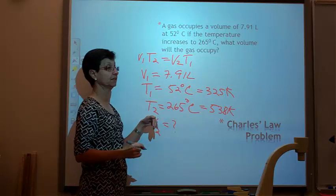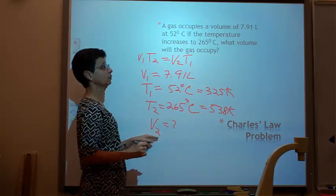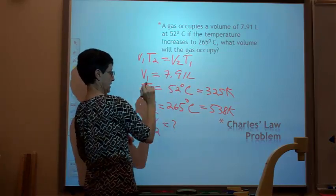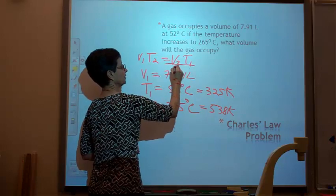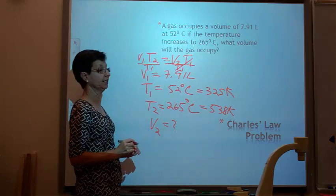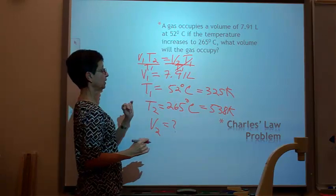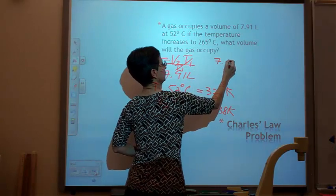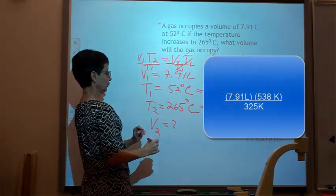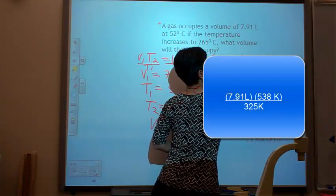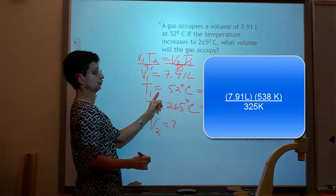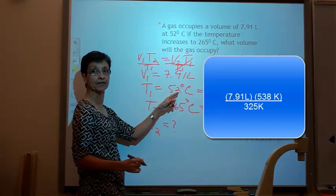Now I'm ready to plug in my numbers as soon as I solve for my variable. What is it that I'm looking for? V2. So I'm going to divide by T1 on both sides, and T1 will go away, and V2 will be my answer. So I'm going to plug in my numbers. V1 equals 7.91 liters times my T2, which is 538 Kelvins, divided by my T1, which is equal to 325 Kelvins.